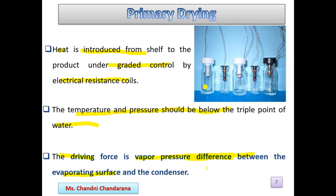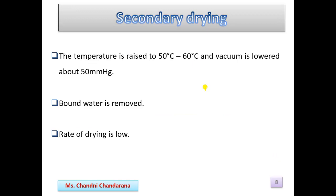In secondary drying, the temperature is raised to 50–60°C and vacuum is lowered to about 50 mmHg — increasing temperature and decreasing pressure — to remove bound water. However, the rate of drying is low and this step takes a long time, approximately 10 to 20 hours for completion.